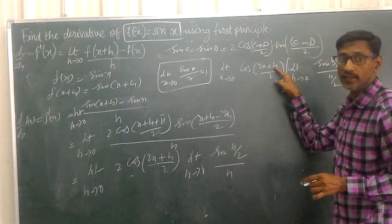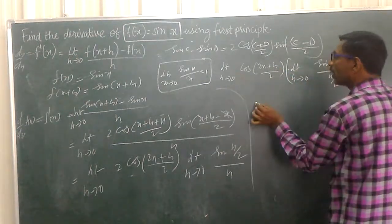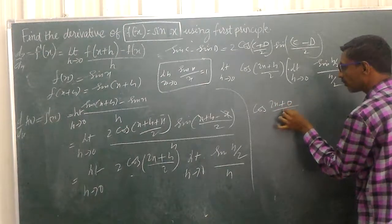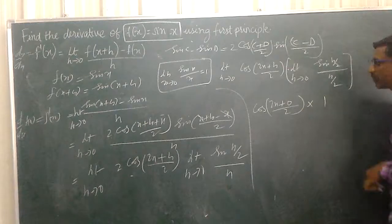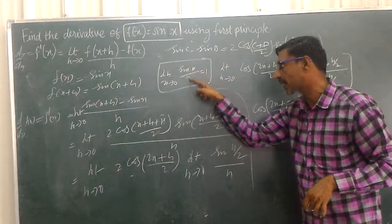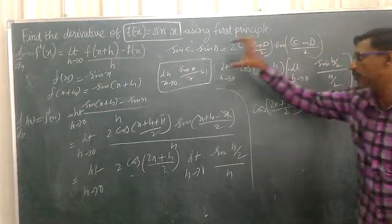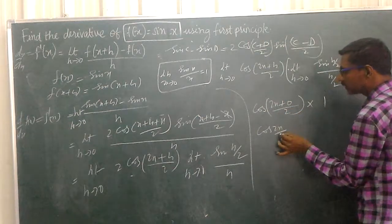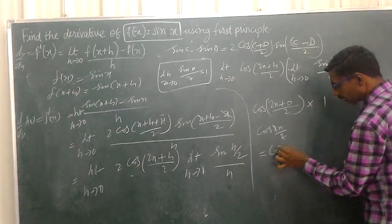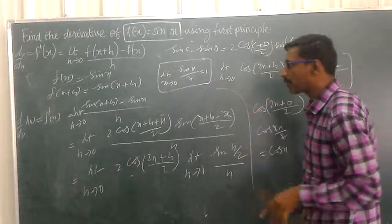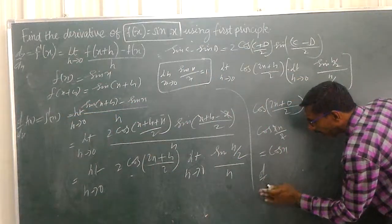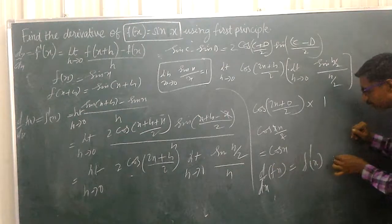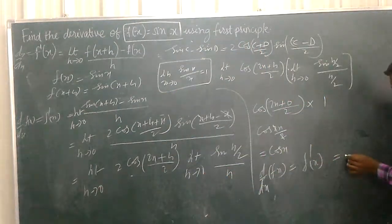We can write 1, because limit x tends to 0, sin(x)/x = 1. This expression is in that form. So substituting 0 for h: cos((2x)/2) = cos(x). The result is equal to cos(x).